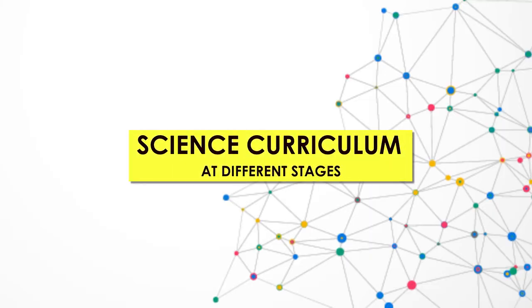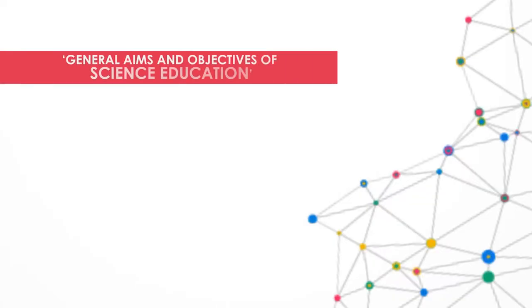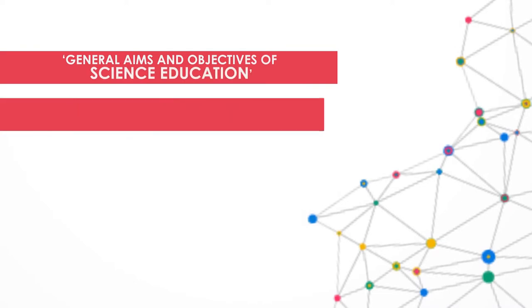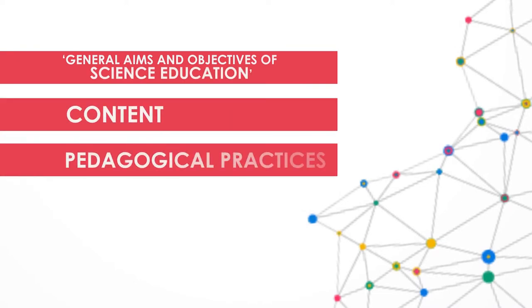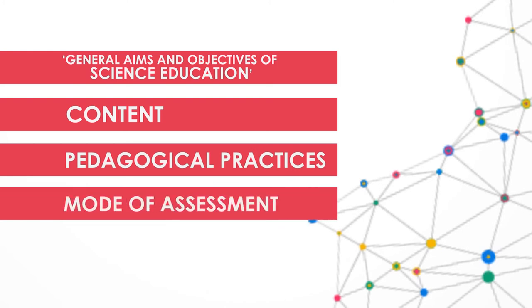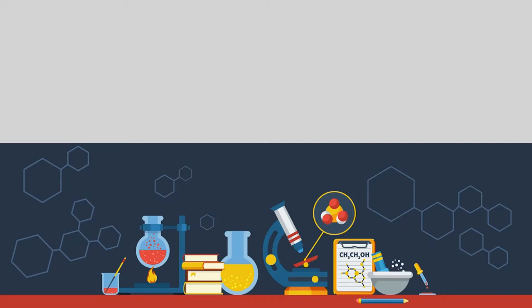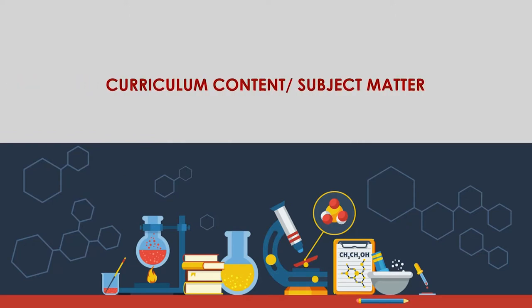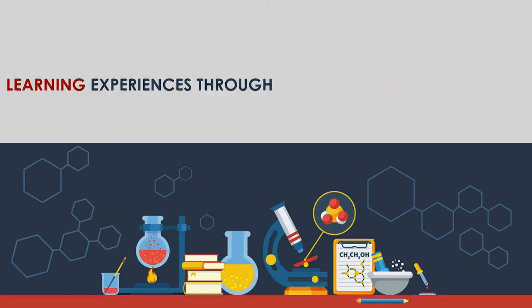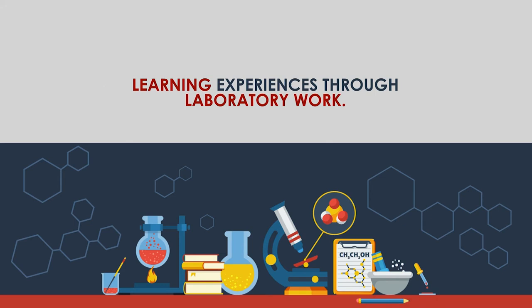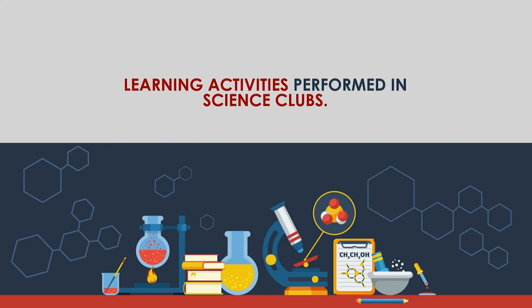Now, the science curriculum at different stages. While developing the curriculum for various stages, factors such as general aims and objectives of science education, content, pedagogical practices, and mode of assessment must be considered. Whatever content and activities we use and apply to achieve our objectives form part of the curriculum. It includes curriculum content and subject matter given in the textbooks. It also includes learning experiences given to students through laboratory work and learning activities performed as part of science clubs in the school.